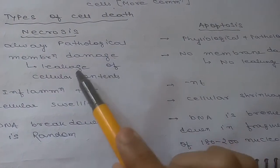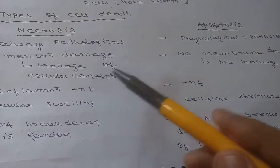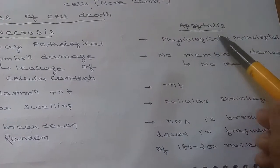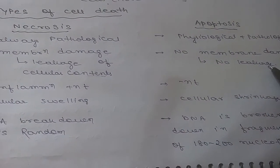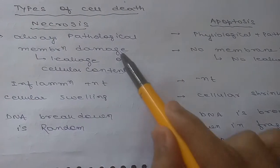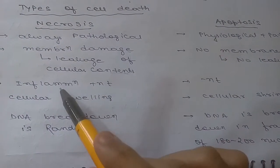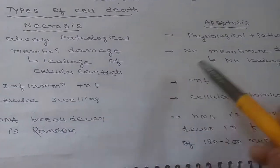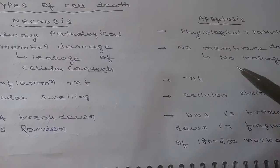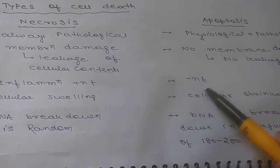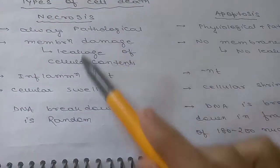In necrosis, membrane damage occurs which leads to leakage of cellular contents out of the cell. In apoptosis, there is no membrane damage, so there is no leakage. Because cellular contents leak in necrosis, it will cause inflammation, but in apoptosis cellular contents are not leaked, so there is no inflammation.